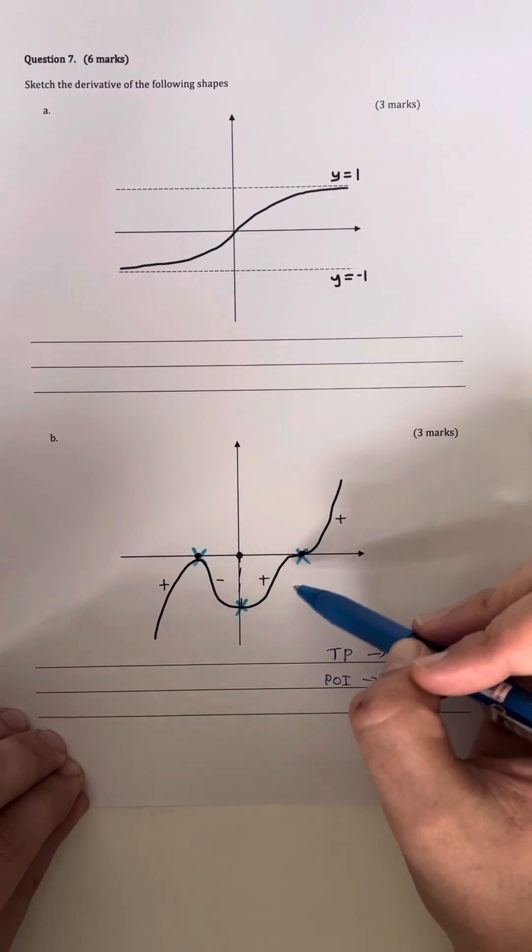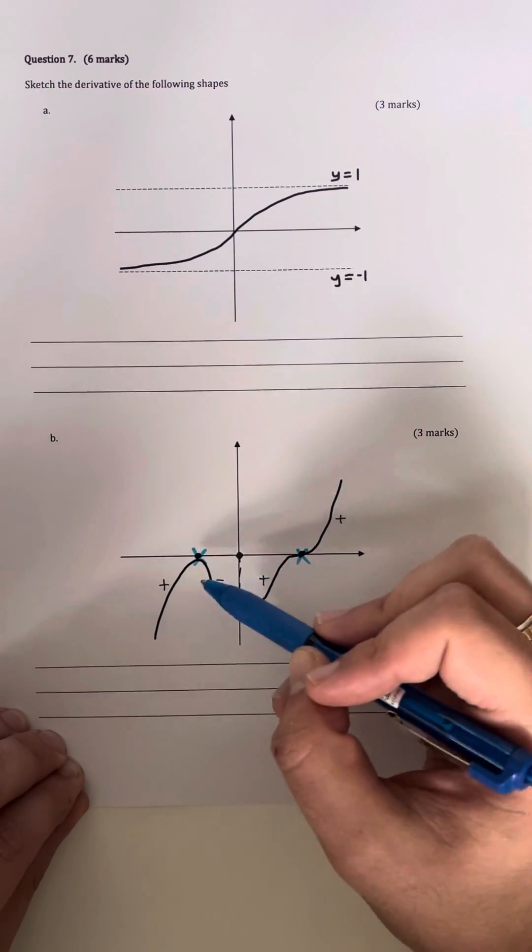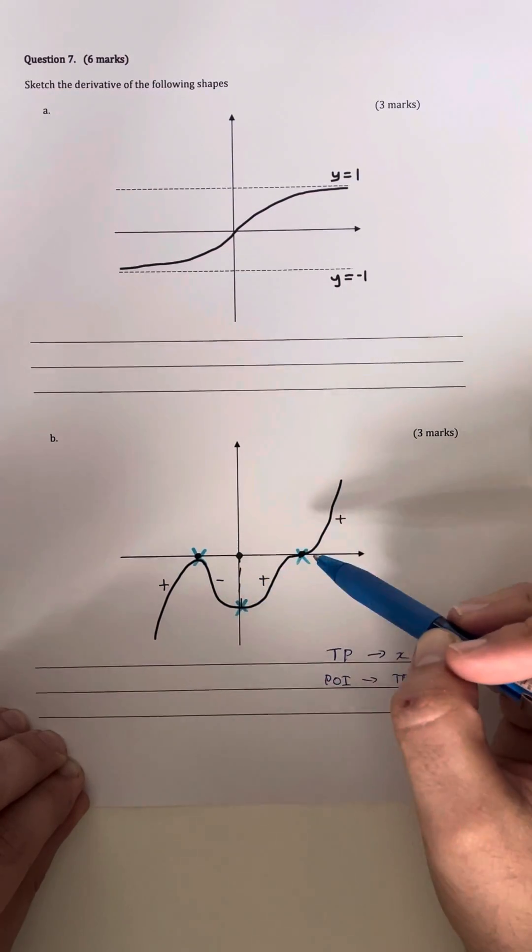In this case, we have this polynomial function. We don't know any information about the function in terms of its points, but what we need to do is sketch a rough derivative of it.